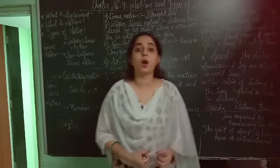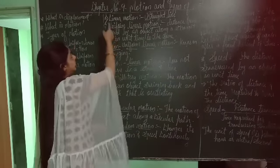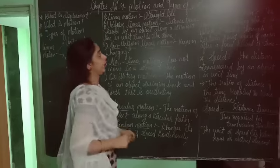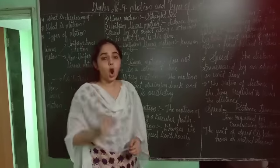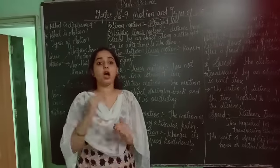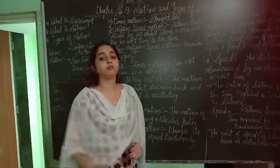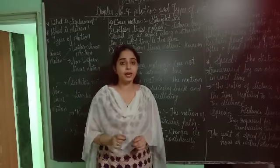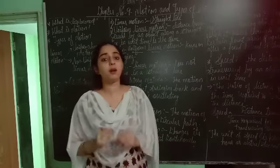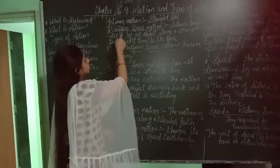Let us discuss about linear motion. In linear motion, the object moves or travels in a straight line. For example, a train or a moving vehicle on the road.